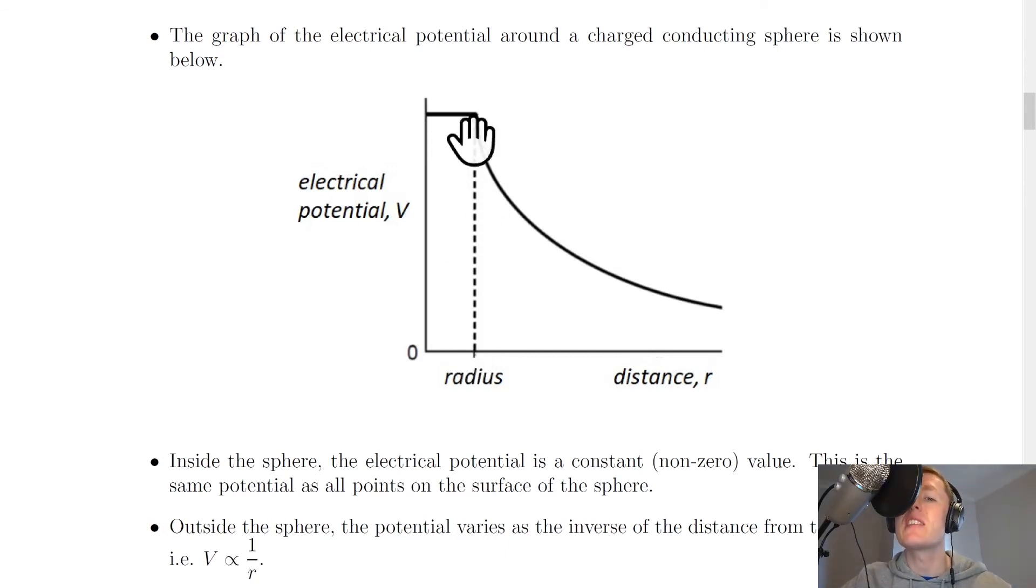And at the radius, i.e. on the surface of the charge sphere, it's also going to be the same as inside the sphere. However, as you get further and further away from the charge sphere, the electrical potential will drop off. But notice how it won't drop off as quickly as the graph for electric field strength. And that is because we've only got V is proportional to 1 over R here rather than 1 over R squared. So this is not an inverse square law, it's just an inverse law.